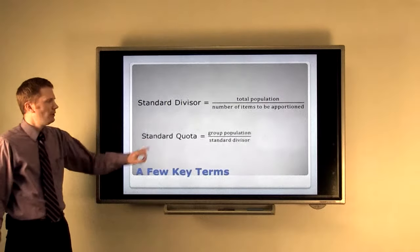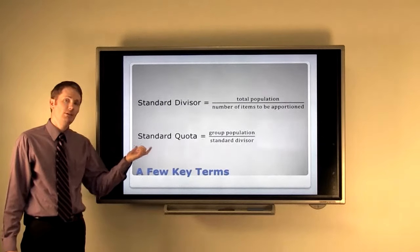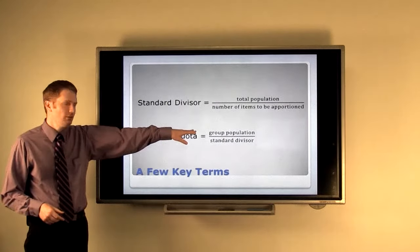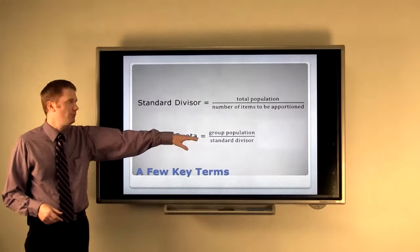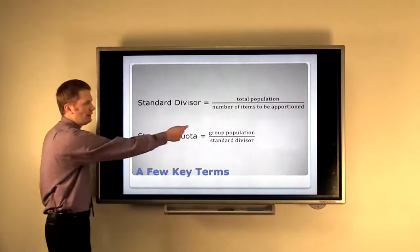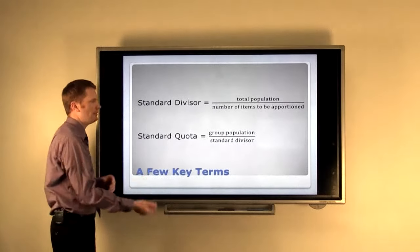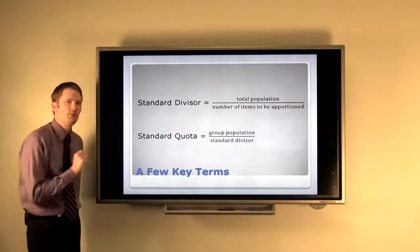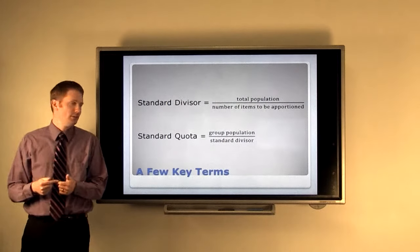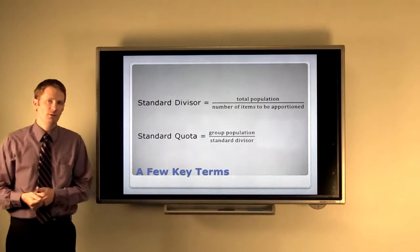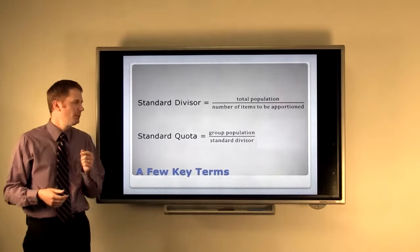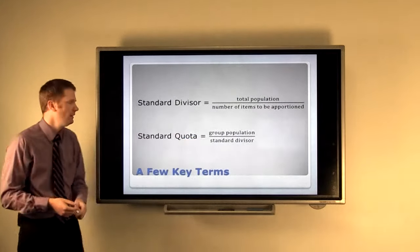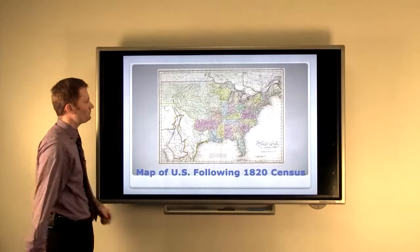Then we get what's called the standard quota. This is something we calculate for each state, or each group if we're doing something else. You take the group population and divide by the standard divisor. So, specifically to the case of the United States, we take each individual state and divide by what the standard divisor is to see how many representatives they actually deserve based on the population. Very rarely, if ever, will this be a nice even number. This ends up being a decimal number.